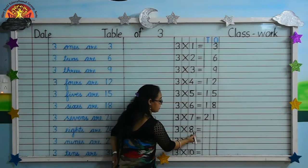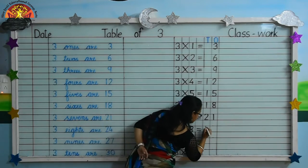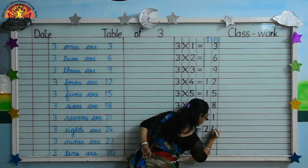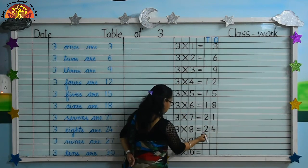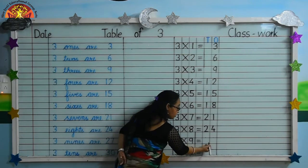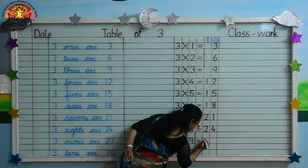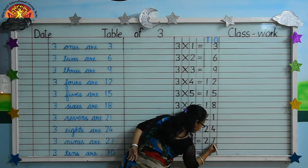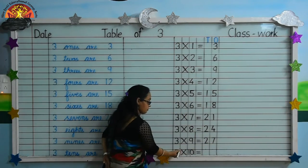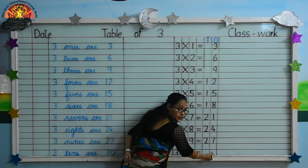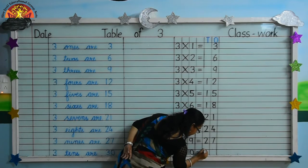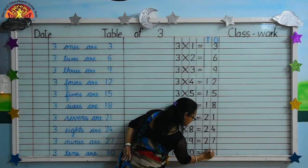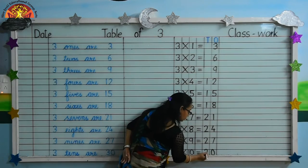Three eights are twenty-four — write two, four — twenty-four. Next is three nines are twenty-seven — write two, seven — twenty-seven. Three tens are thirty — three zero — thirty. Write three, zero — thirty.